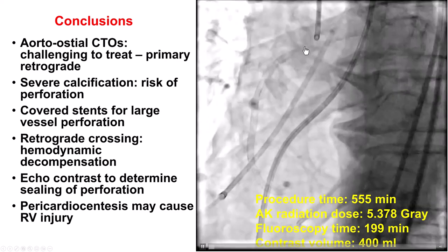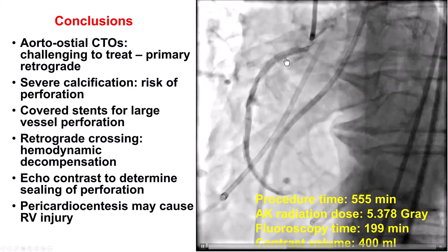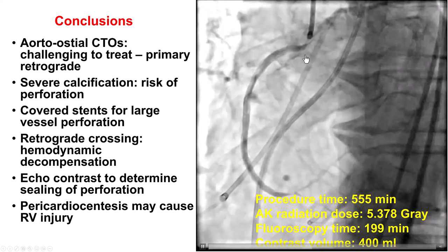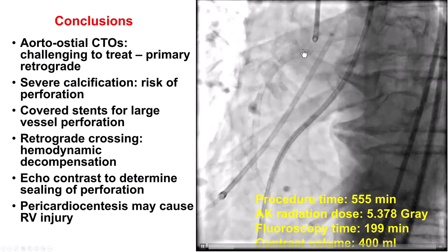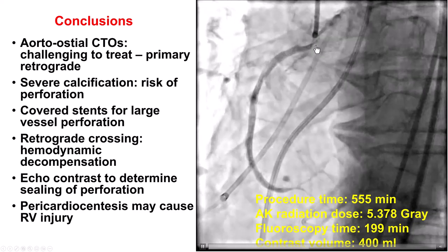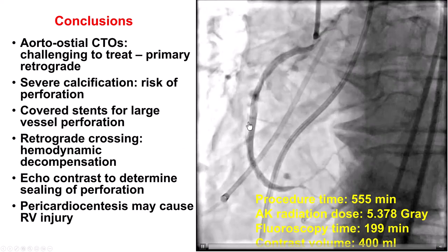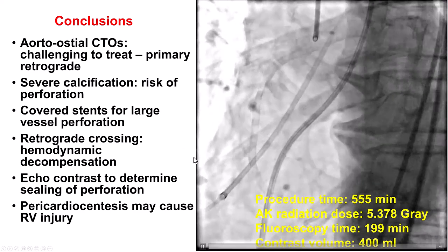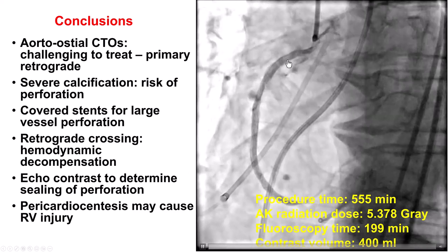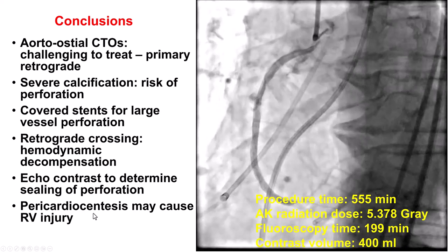We did have a large vessel perforation. The way to treat this is by using a covered stent, which we did with a PK Papyrus. One key lesson is that if you place a papyrus that protrudes slightly into the aorta — which is typical for aorto-ostial locations — it can be very hard or impossible to re-engage the vessel with a guide catheter. We had re-accumulation of the pericardial effusion despite using a drain. Echo contrast can be very useful for determining whether the perforation has sealed. In our case it had not, because we had injured the right ventricle, which ultimately required cardiac surgery.